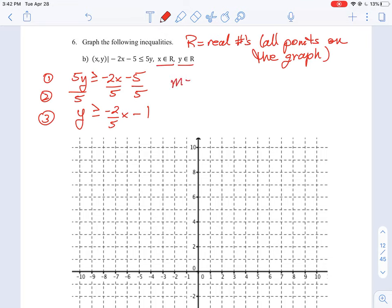So we know a couple things. We know our slope is now negative 2 over 5 and we know our b intercept is negative 1, which means our coordinate is 0 negative 1.